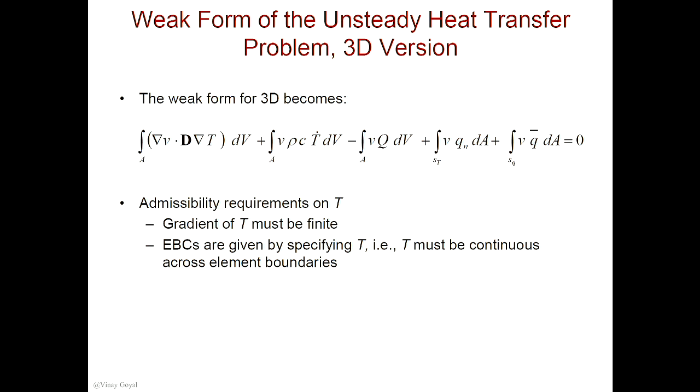So what are the admissibility requirements on the temperature? For the temperature T to be admissible, the gradient, when I calculate it, must be a finite number — I should not have a value that blows up. Also, I don't want a value that gives me zero; I want to be able to calculate the gradient.